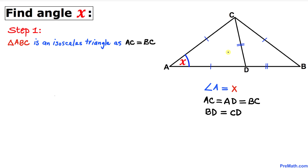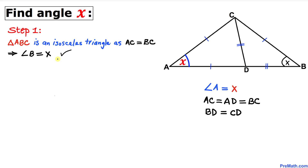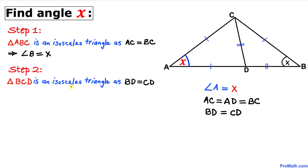Let's focus on the big triangle ABC. We know that this is an isosceles triangle since side AC equals side BC. So therefore if angle A is X, then angle B is going to be X as well.